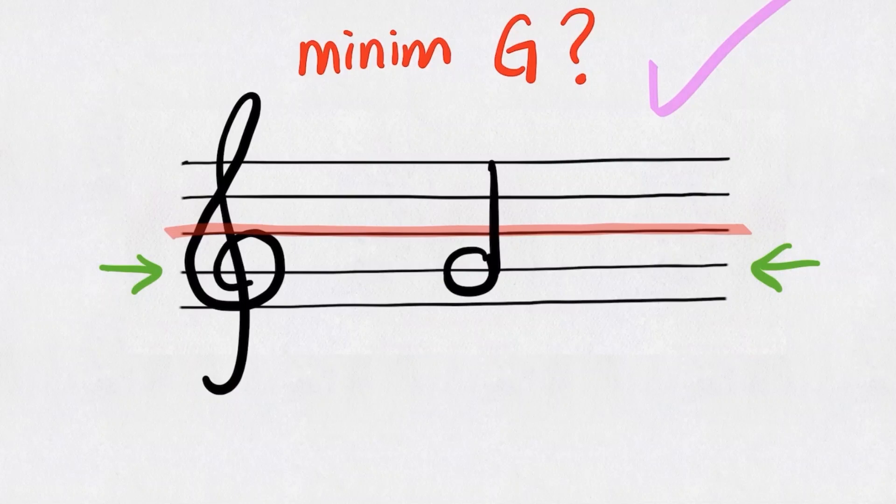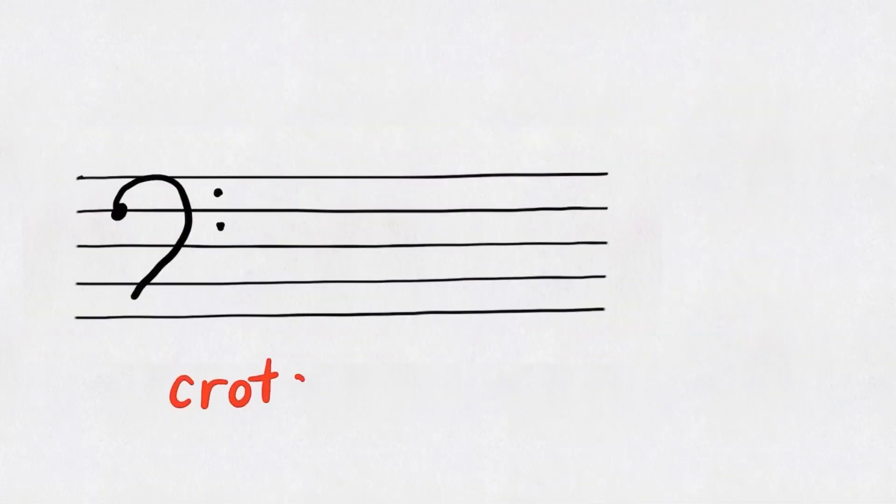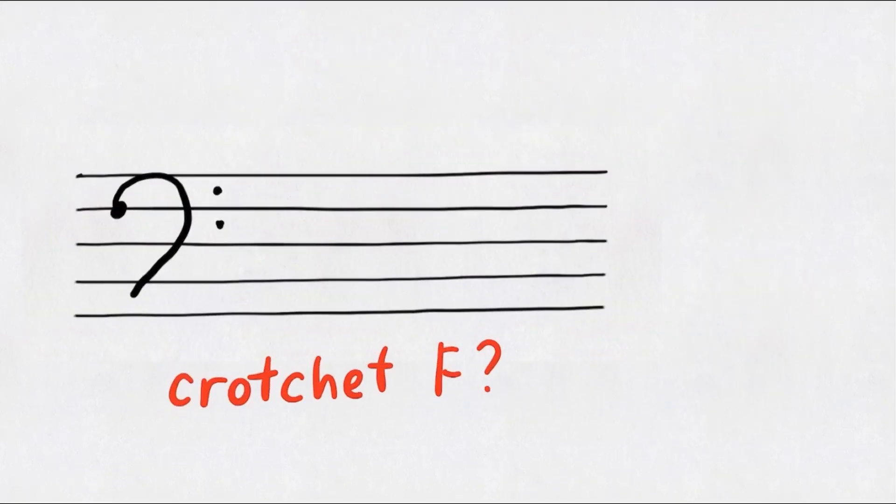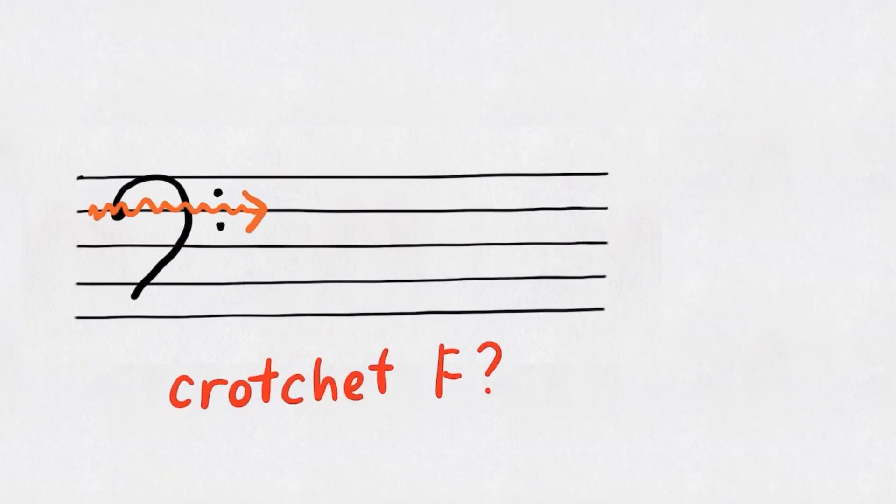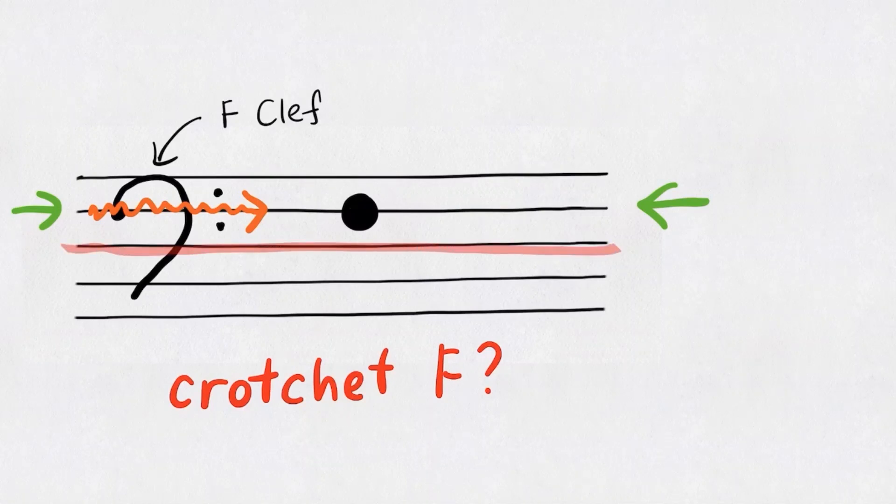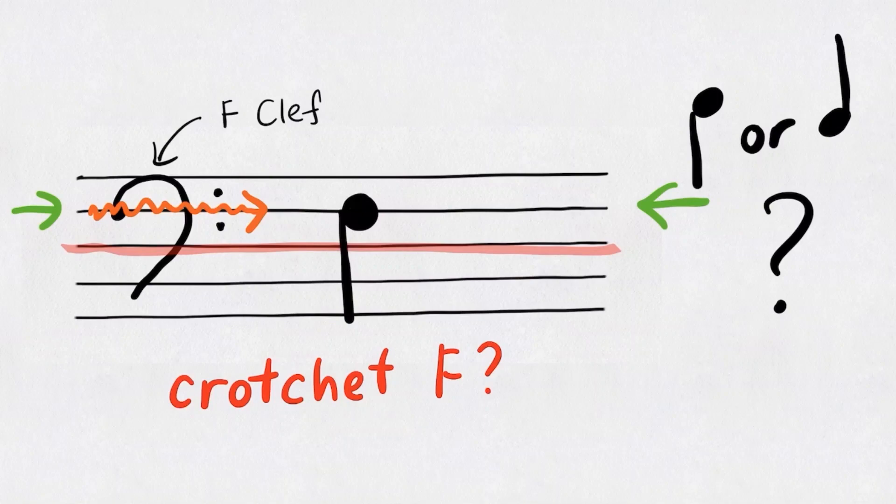One last example in bass clef. We are looking for F note here. And remember, the other name for bass clef is called the F clef, right? So the F line is right in between the two dots. And boom! A crotchet F right here. This note is above the middle line. Is the stem going up or down? The answer is stem going down from the left.